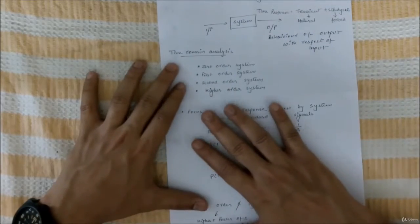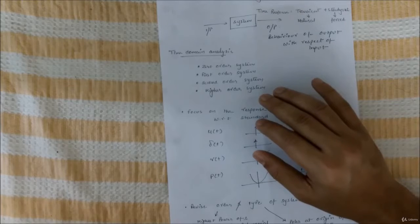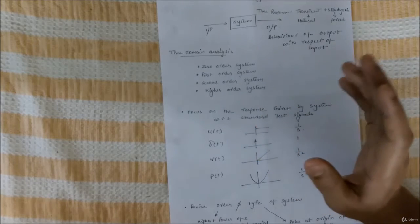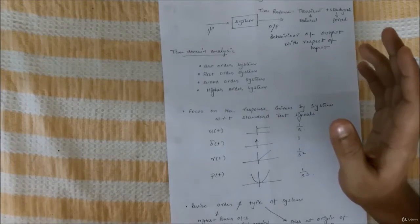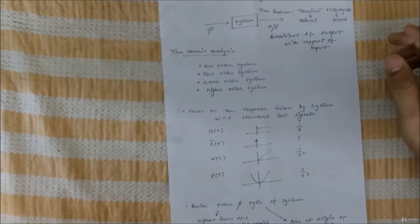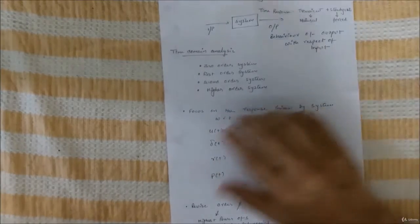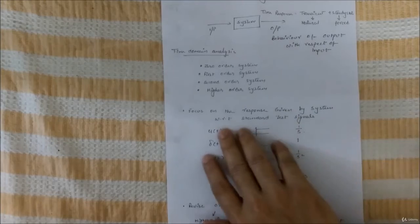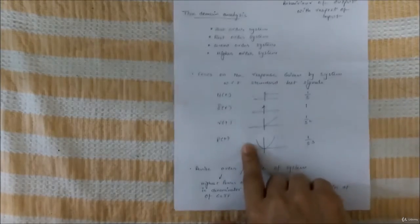Here you can see, mostly when we talk about practical control systems, the signals sometimes are known to us and sometimes they are not known to us. We can't have a system where we'll give a different input and every time calculate a set of outputs. What we do usually is we focus on the response given by system with respect to standard test signals.